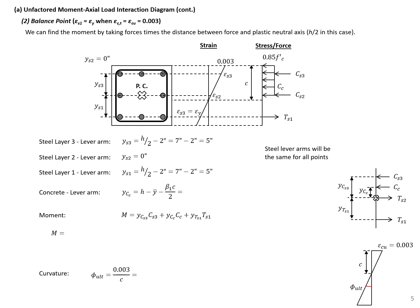To find the moment at the balance point, we compute lever arms for each force, summing moments about the plastic neutral axis. The steel lever arms for the top and bottom layers are both 7 − 2 = 5 inches. The middle steel is at the same level as the plastic neutral axis, so it has zero lever arm and contributes nothing to the moment.